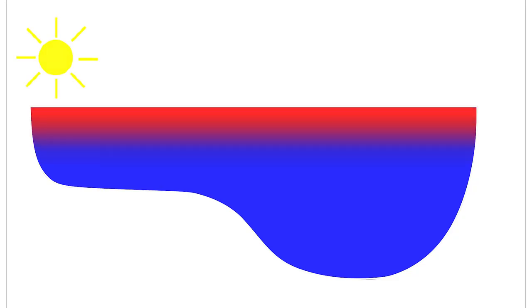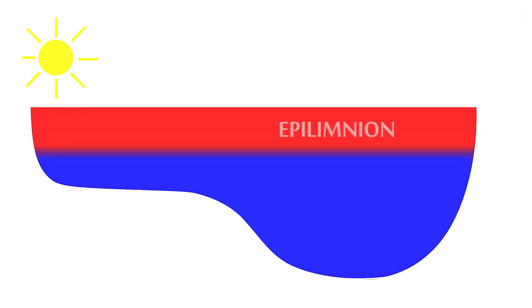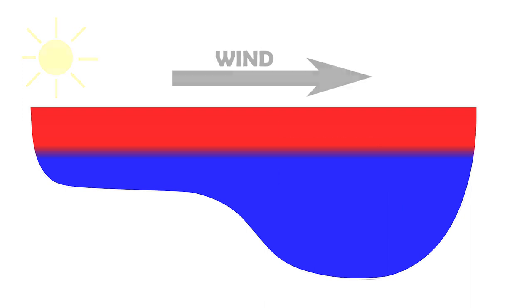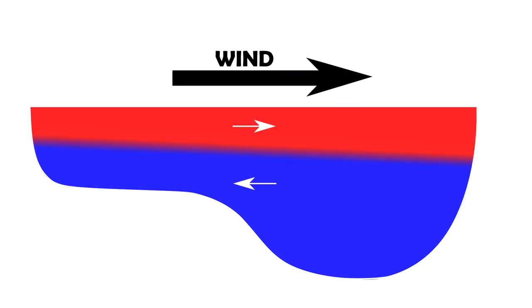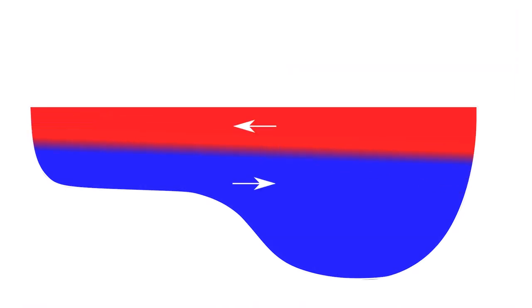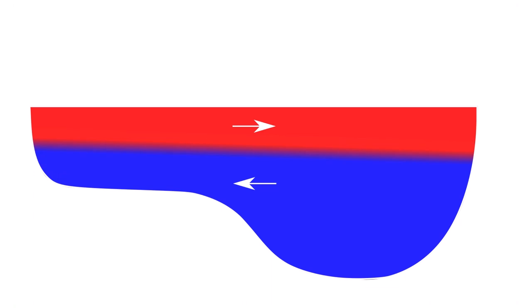Most temperate lakes stratify during the summer, resulting in a warm, well-mixed epilimnion sitting on top of a cold, dense hypolimnion. Wind shear across the lake's surface drives large amplitude internal waves along the thermocline, the interface between the two layers.